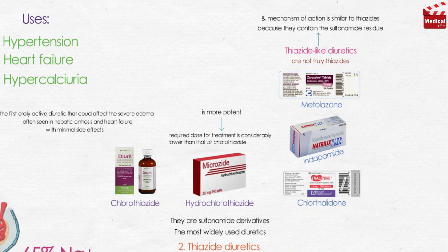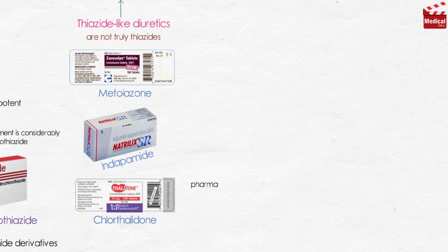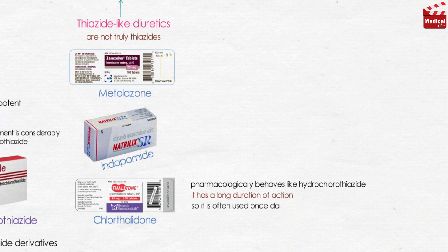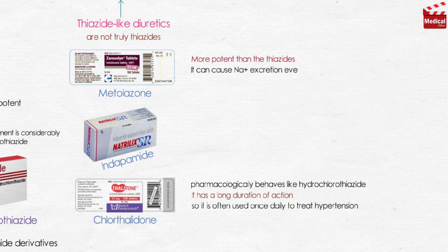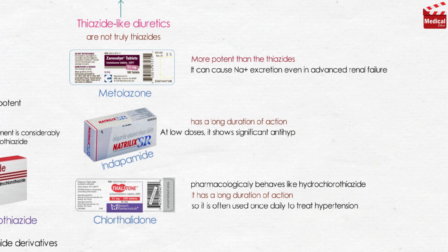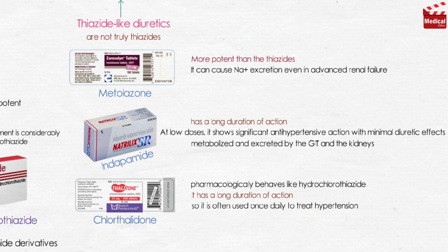Regarding thiazide-like diuretics: chlorthalidone pharmacologically behaves like hydrochlorothiazide and has a long duration of action, so it is often used once daily to treat hypertension. Metolazone is more potent than the thiazides and can cause sodium excretion even in advanced renal failure. Indapamide has a long duration of action; at low doses it shows significant antihypertensive action with minimal diuretic effects, is metabolized and excreted by the gastrointestinal tract and kidneys, and is useful for patients with renal failure.